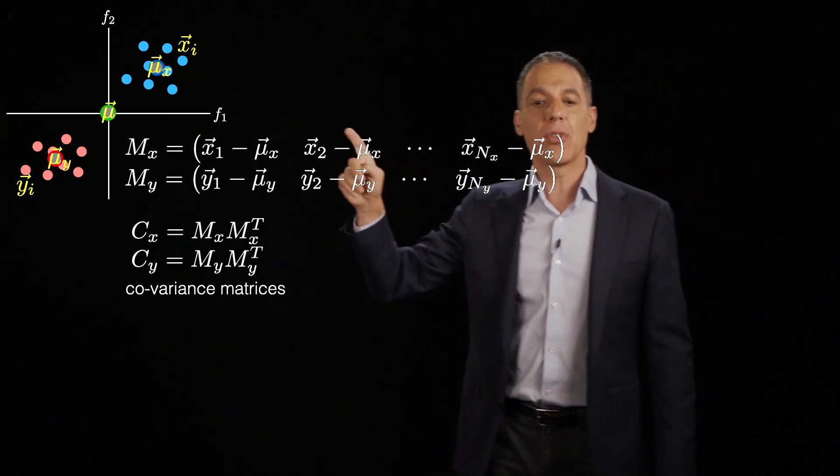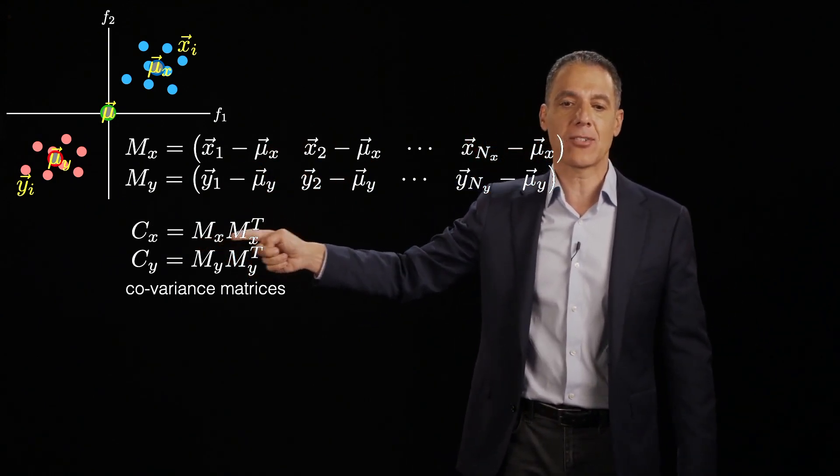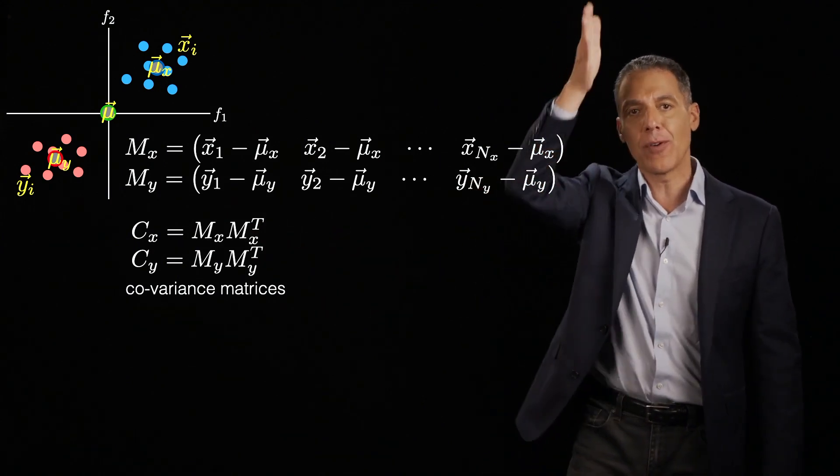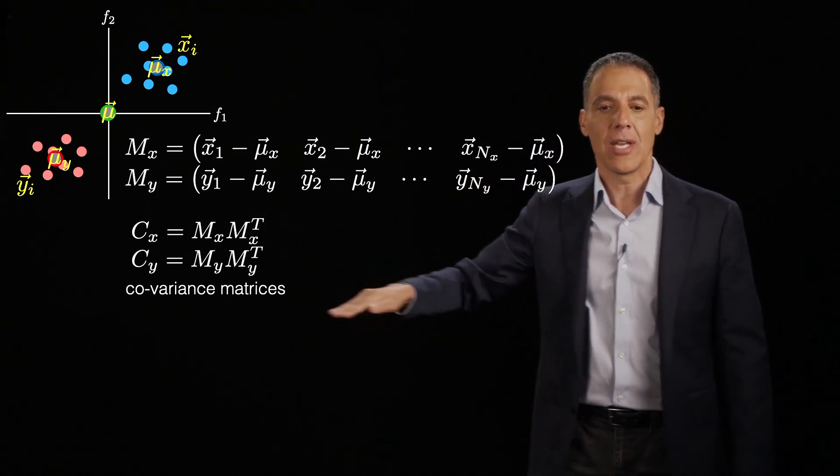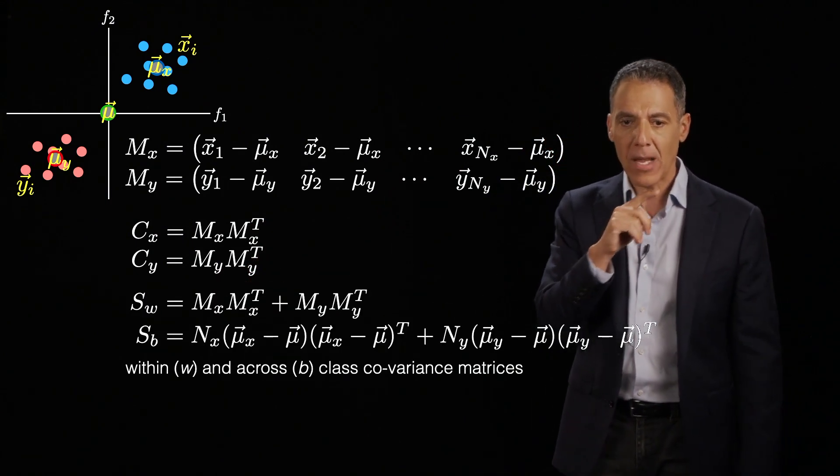And now I'm going to compute the covariance matrix. So the covariance matrix is simply this matrix mx times mx transpose, which tells me how much things co-vary in each of the directions. And I have another one for cy for the y data points.